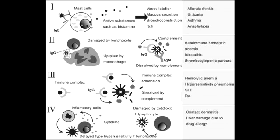Goodpasture syndrome, bullous pemphigoid, and pemphigus vulgaris are also examples of type 2 hypersensitivity reaction. One thing to note is that type 2 hypersensitivity tends to be specific to a tissue or site where the antigen is found, so the attack happens at a local area and the disease occurs at that same specific area.